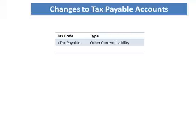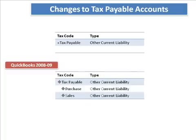The third area is changes to the tax payable accounts. These are special control account types in QuickBooks. In the past, you would have had a single tax payable account. With QuickBooks 2008-2009, it allows us to modify and have a more meaningful tax payable structure — creating a tax payable purchase side and a tax payable sales side, with the ability to link those accounts to the particular tax agency.